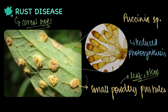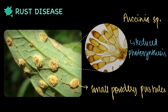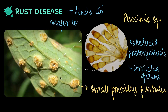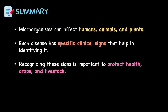Infected plants suffer from reduced photosynthesis, nutrient loss and shriveled grains, ultimately resulting in major crop losses. Therefore, a lot of control measures are kept in place to minimize the spread of the disease and ensure minimal crops are affected. So from this we can understand that microorganisms — or pathogens specifically — can affect humans, animals as well as plants, and each disease has specific clinical signs that help us in identifying it. Animals and plants are reared at a large scale for food, so recognizing these signs is important to maintain the overall health of crops as well as livestock.